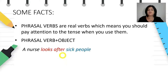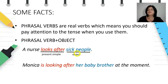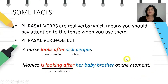Phrasal verbs can be followed by an object. Let's see these examples. 'A nurse looks after sick people.' Here you can see the same phrasal verb 'look after', but because we talk about a fact, 'look after' is in present simple, and it is followed by an object — 'sick people'. In another sentence, 'look after' is in present continuous because we are talking about something happening at the moment of speaking, and the object is 'her baby brother'.